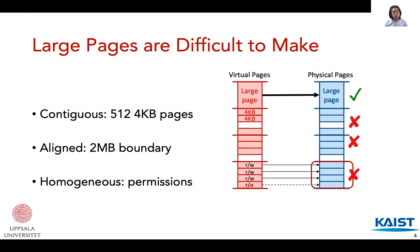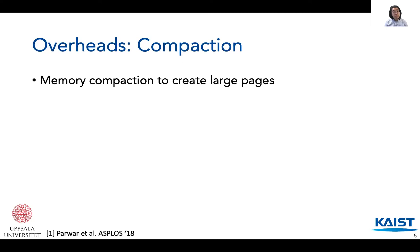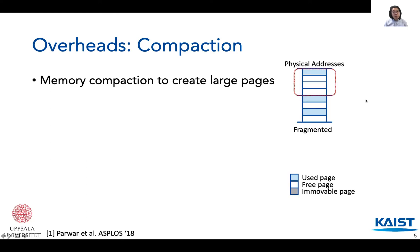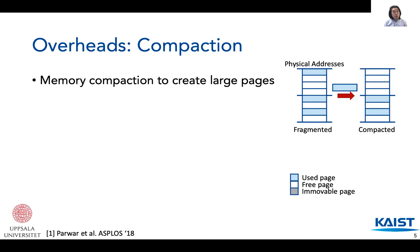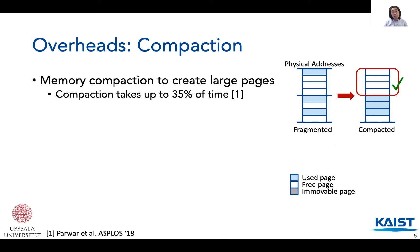These requirements introduce overheads associated with using large pages. The first overhead is memory compaction. As the system executes, memory is constantly fragmented. To keep allocating large contiguous memory for large pages, the operating system must compact or defragment memory. The OS compacts memory by moving used pages into free space in the lower 2MB region, so the top 2MB region is free and can be allocated as a large page.